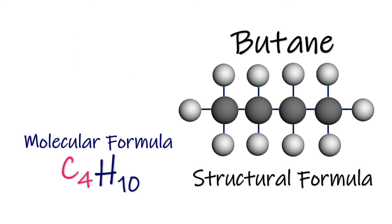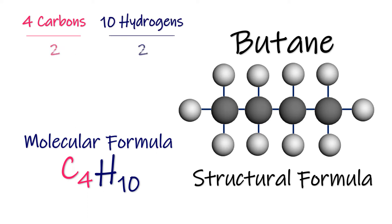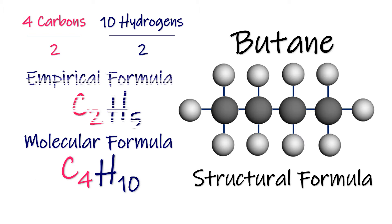To deduce the empirical formula from the molecular formula, we only need to find the ratio of carbon atoms to hydrogen atoms. Let's write the ratio of four carbons to ten hydrogens in its simplest form by dividing both numbers by two. This gives the empirical formula of butane.